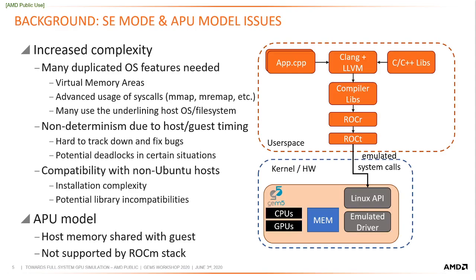In order to support SE mode simulation, many new features had to be added to GEM5. For example, virtual memory areas are needed by the ROCr runtime, the memory map system calls had to be heavily modified, and support for tracking movable memory information needed to be added. These features were added to the develop branch of GEM5 in late March. Other issues that arose with SE mode were non-determinism and compatibility issues. Two runs in SE mode differ due to timing between the host and guest for common operations like file IO, making it difficult to debug using tools like the exec trace diff provided with GEM5. There are also simulation deadlocks that have been occasionally observed due to timing between system calls.